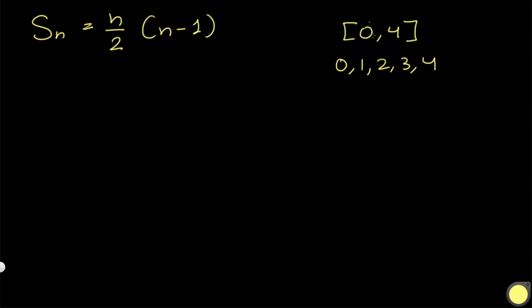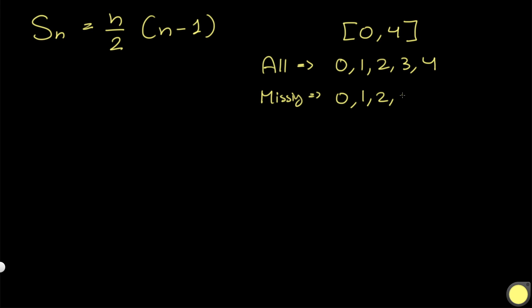So with range [0, 4] and numbers 0, 1, 2, 3, 4, there's nothing missing. But in our problem we know exactly one number is always missing. The way to find which number is missing is to find the sum of the complete expected series, find the sum of the numbers we actually have, and the difference between them tells us which number is missing.